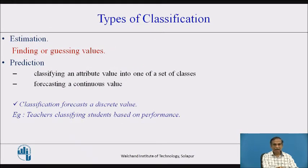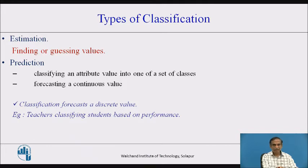There are two types of classification methodologies. The first is estimation, where we find or guess a particular value and use it to define which class that item belongs to. The second method is prediction, where we classify an attribute value into one of a set of classes based on the value of the attribute and forecast a continuous value.